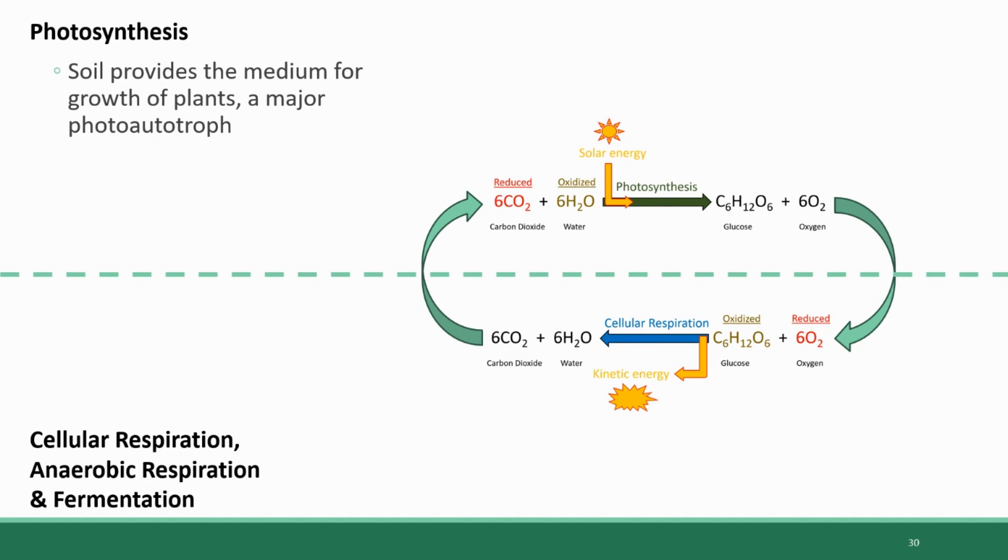But soil also provides the habitat for the major decomposers: bacteria, fungi, and certain types of worms and insects. The decomposition of organic matter is the opposite of photosynthesis. Through cellular respiration or other metabolic processes like fermentation, decomposers will break down organic molecules and release carbon dioxide into the atmosphere.